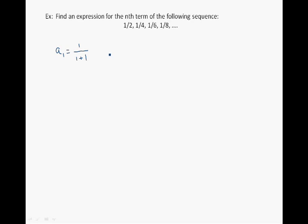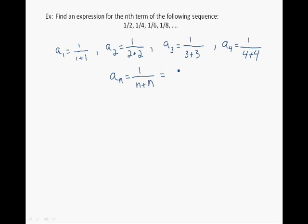We're now going to continue with another example: find an expression for the nth term of the following sequence. And here's the solution. The terms of the sequence can be written in the following form — here's the first term, the second term, the third term, and the fourth term. From this, we see that the nth term equals 1 over 2n. We're now going to continue with another example, which is to sketch the graph of the sequence 1 over 2n, which is the same sequence we found in the previous example.